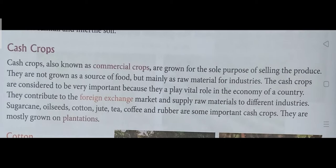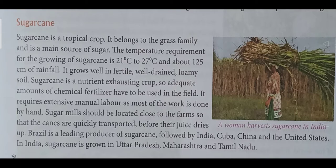In this class I will explain about sugarcane. Sugarcane is a tropical crop; it belongs to the grass family and is a main source of sugar. The temperature requirement for growing sugarcane is 21°C to 27°C, with about 125 centimeters of rainfall required. It grows well in fertile, well-drained loamy soil. Sugarcane is a nutrient-exhausting crop, so an adequate amount of chemical fertilizer has to be used in the field.